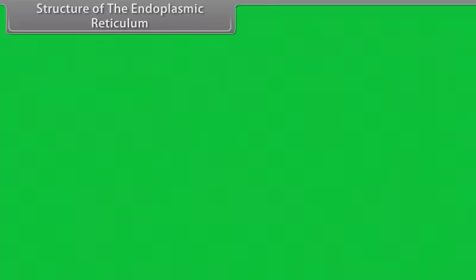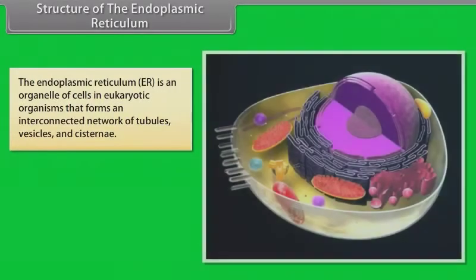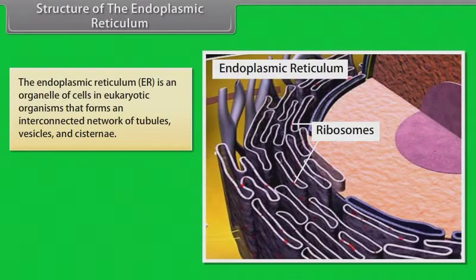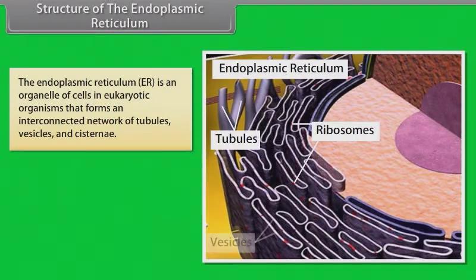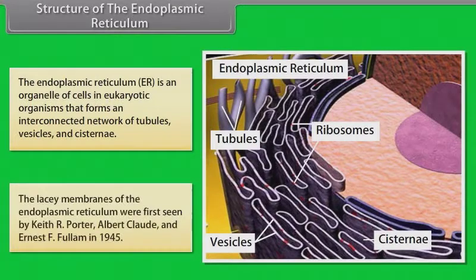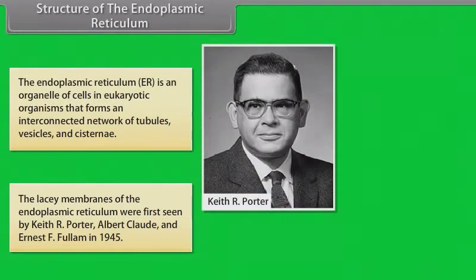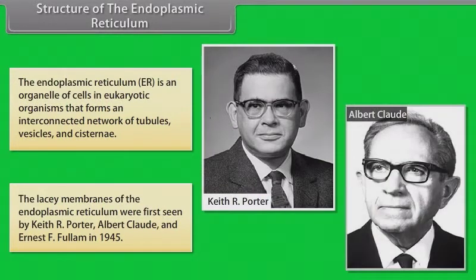The endoplasmic reticulum (ER) is an organelle of cells in eukaryotic organisms that forms an interconnected network of tubules, vesicles, and cisternae. The lacy membranes of the endoplasmic reticulum were first seen by Keith R. Porter, Albert Claude, and Ernest F. Fullam in 1945.